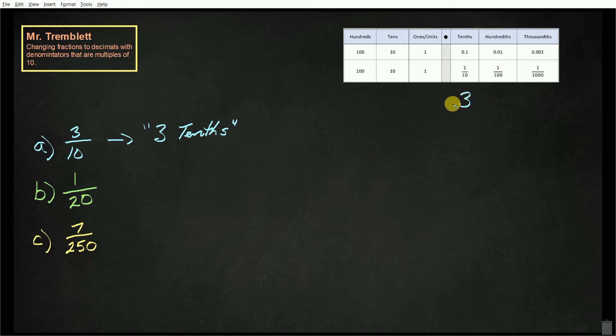So we can put a 3 here, our decimal would be here, and we would have 0 ones. We can write 3 tenths as a fraction, in words, or as 0.3. They are all equivalent.